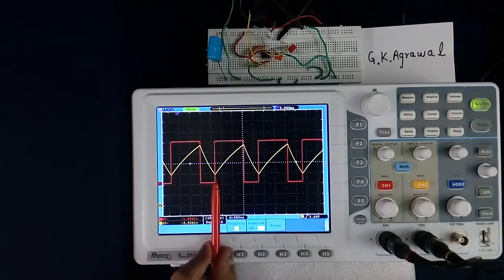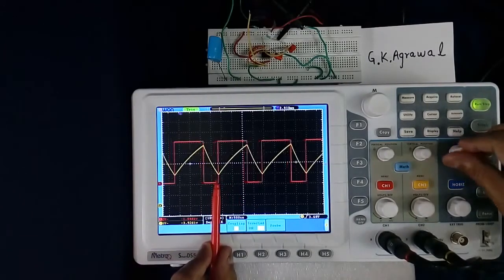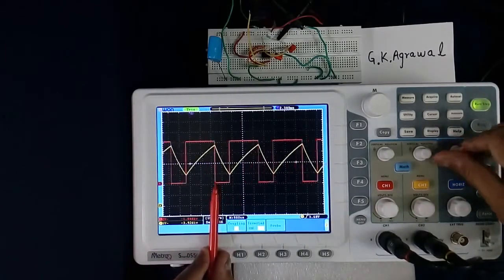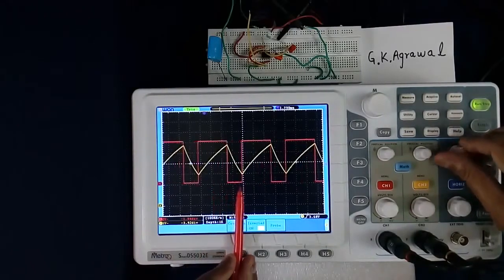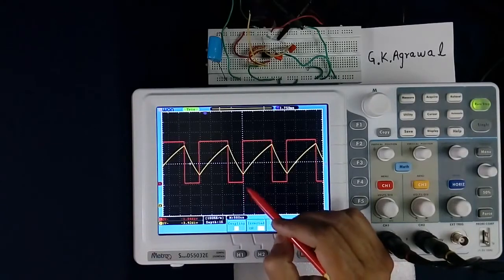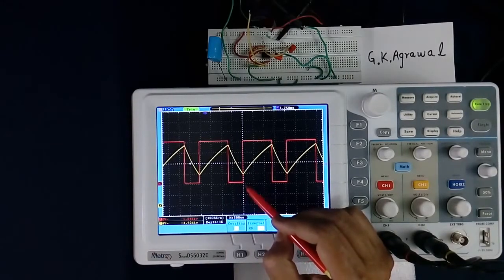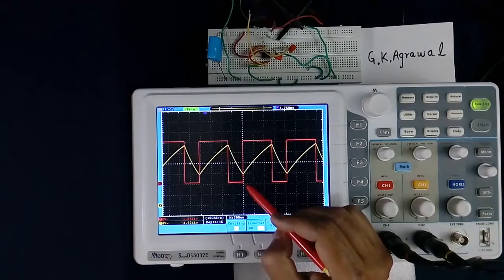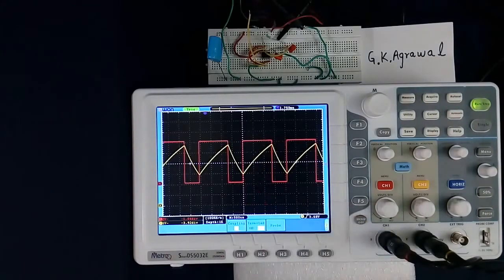We can bring this point of measurement using this horizontal position here in the middle line, so it will be easier to measure. 1 volt, 2 volt. Now you can count easily - 2.2, 2.4, 2.6, 2.8, like that.